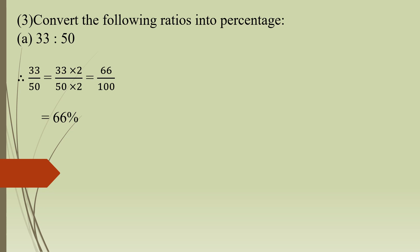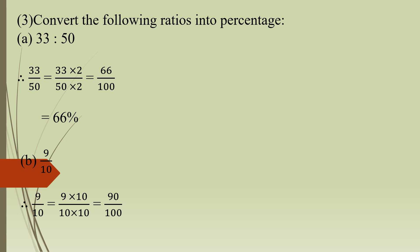Moving to the next part: 9 upon 10. To make the denominator 100, multiply both numerator and denominator by 10. So 9 upon 10 equals 9 into 10 upon 10 into 10, which gives 90 upon 100. So the percentage is 90%.